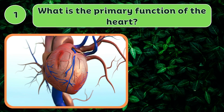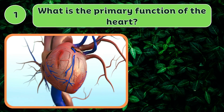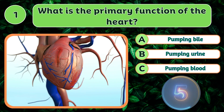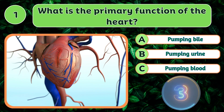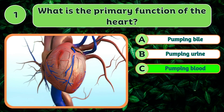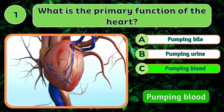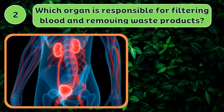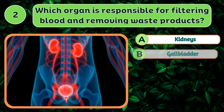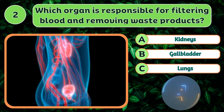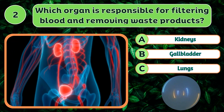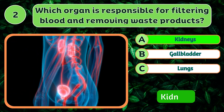What is the primary function of the heart? Pumping blood. Which organ is responsible for filtering blood and removing waste products? Kidneys.